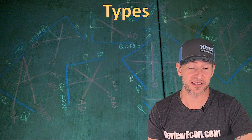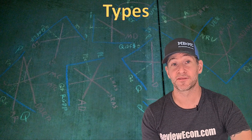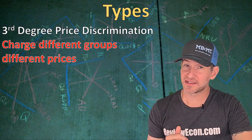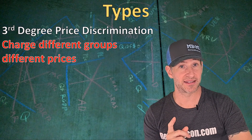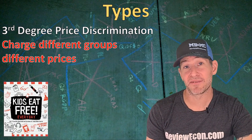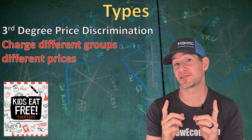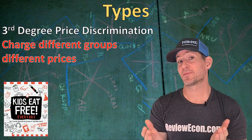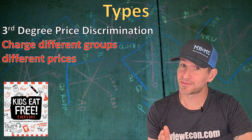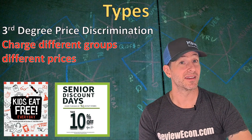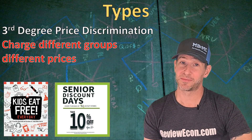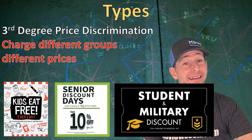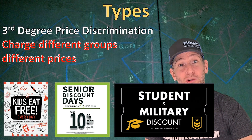There are three different types of price discrimination. We're going to start with the third one first: third degree price discrimination. Here businesses are charging different groups of people different prices. You might see 'kids eat free' advertisements for restaurants, because businesses know that families have more price sensitivity and so they make it cheaper for families to eat at their restaurants. You've also seen senior citizen discounts, which is the same thing as charging young people more. Students also get discounts, as well as the military — that is price discrimination by group.